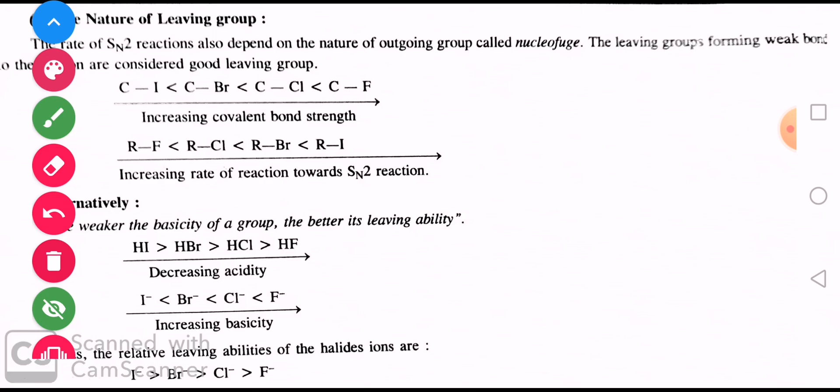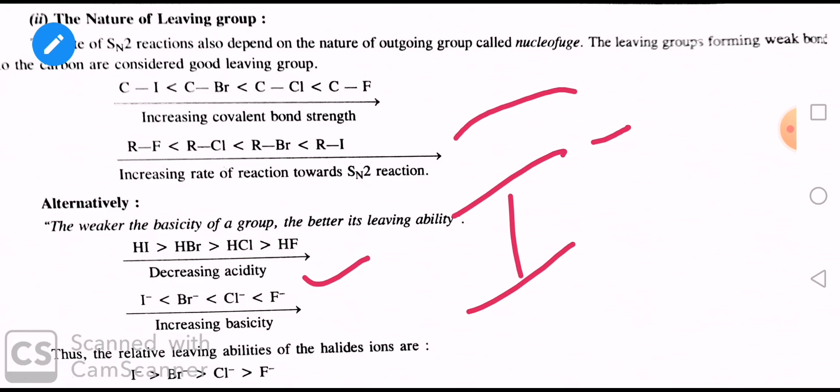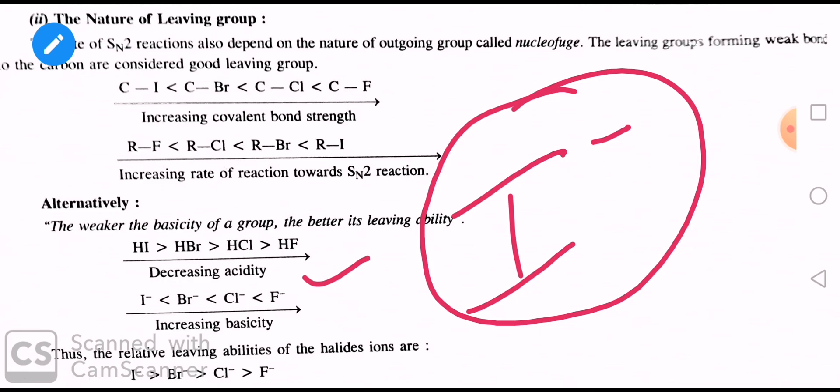इसे इस form में भी समझें: जितना weak base होगा उतना better leaving group होगा। Weak base वो है जो electron donate नहीं कर पाता, यानि जो negative charge को hold कर पाता है (जैसे I⁻)। Lewis basic property मतलब electron donate करना — weak base electron donate नहीं करेगा, इसलिए better leaving group बनेगा।